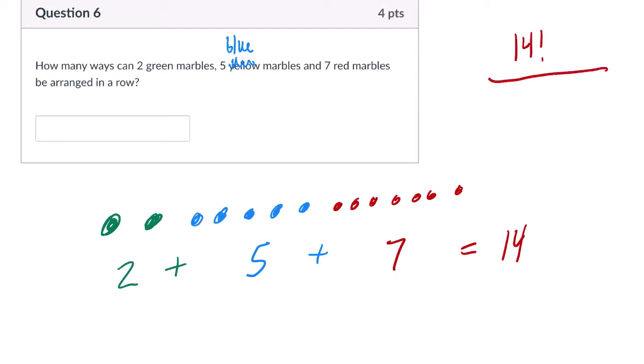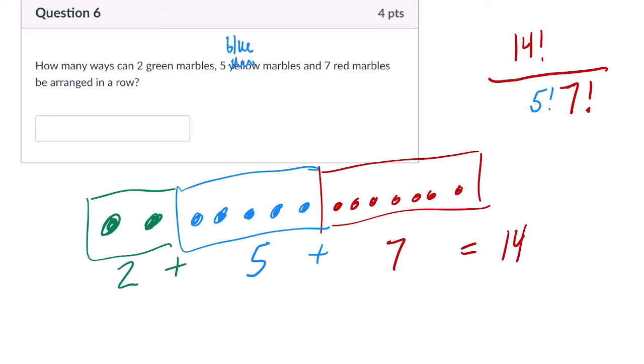But you want to divide that out by all the repetition that we have. There are seven factorial ways to arrange these identical red marbles here, and they'll all look the same. There are five factorial ways to arrange those blue marbles, and two factorial ways to arrange those green marbles.